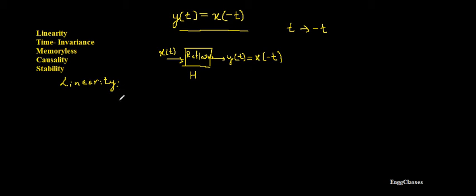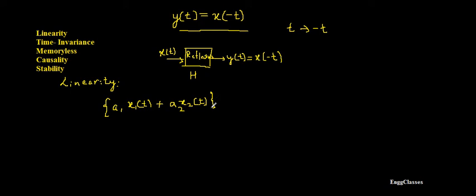Coming back to the linearity property: any system is said to be linear if it satisfies the properties of superposition and homogeneity. To consider that, I need at least two inputs — let them be x1 of t and x2 of t. I will scale x1 of t by factor a1, scale x2 of t by factor a2, add these two inputs, and give this combined input to the system of operator h to get output y1 of t. The system replaces t with minus t wherever it finds it.